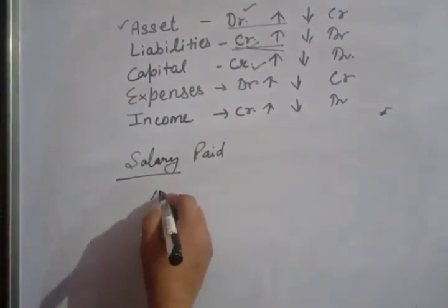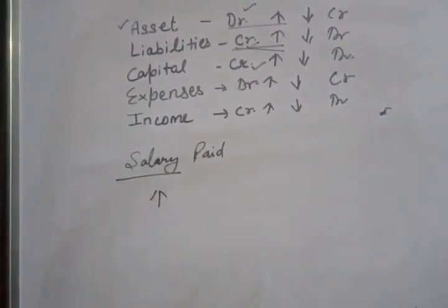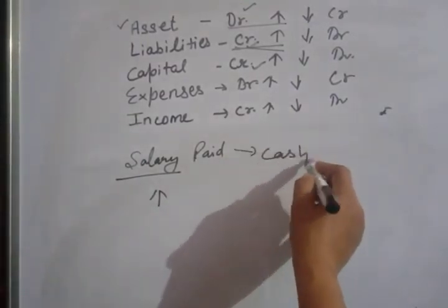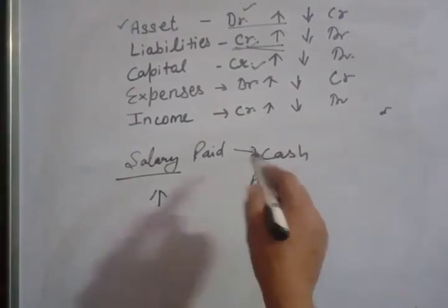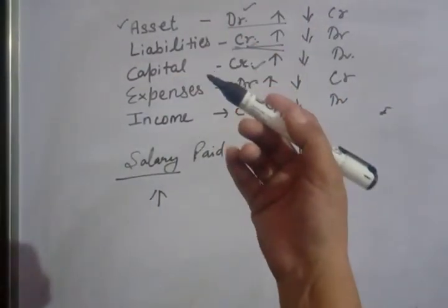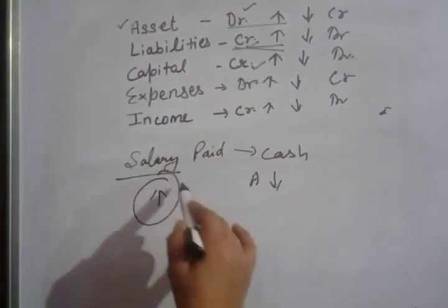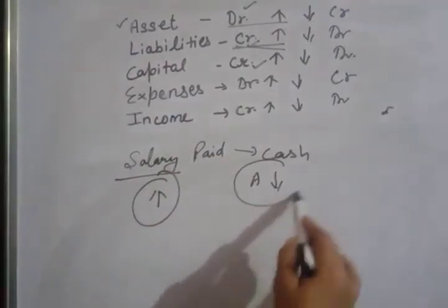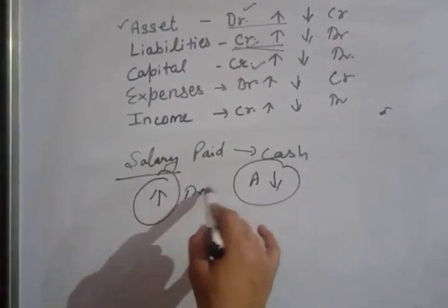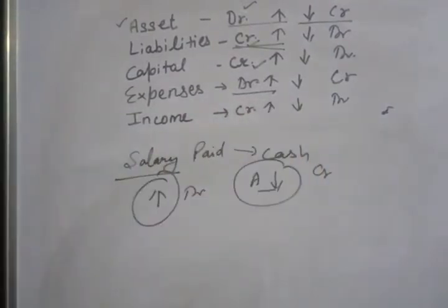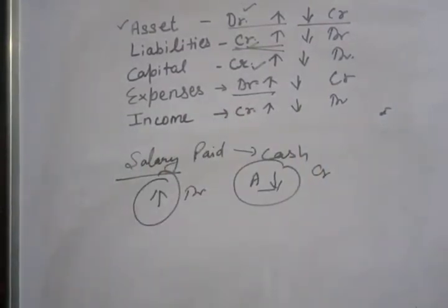Your expenses are increased. When you pay, you pay by cash. Automatically cash goes out. Cash is an asset. When cash goes out, the asset decreases. When expenses are increased, we debit. When assets decrease, we credit. So expenses are debited and cash is credited.